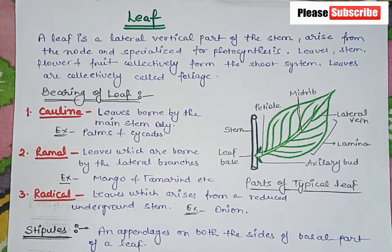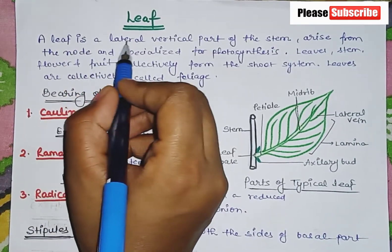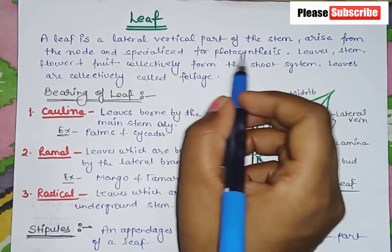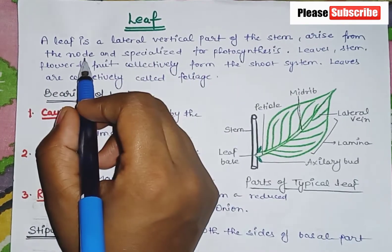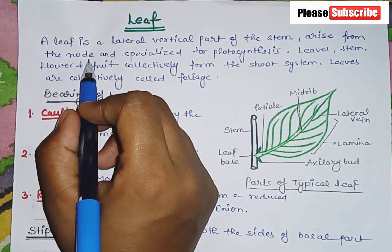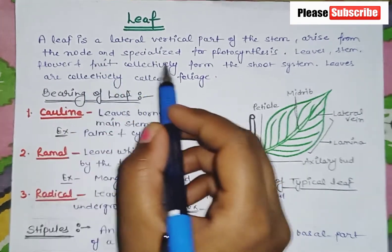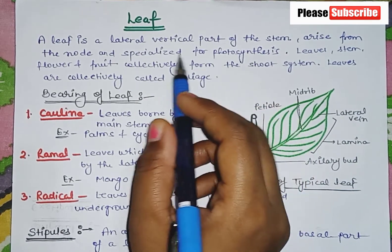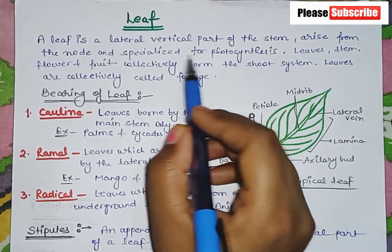Leaf is a very important part of a plant, like stem or roots. A leaf is a lateral, vertical part of the stem that arises from the node and is specialized for photosynthesis. In the stem there are nodes and inter-nodes. Leaf arises from the node and plays a very special role in the process of photosynthesis.